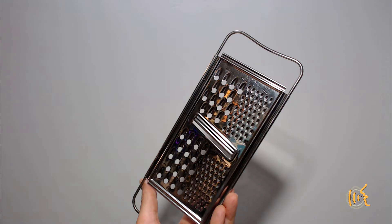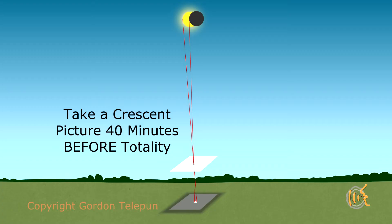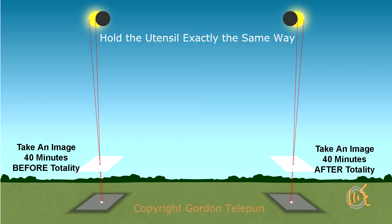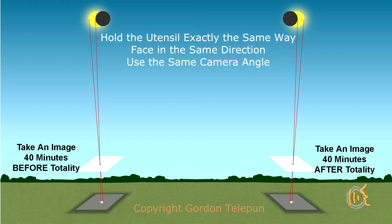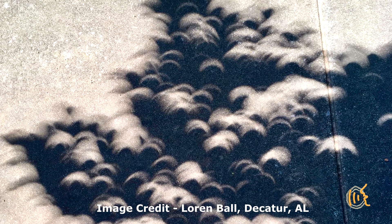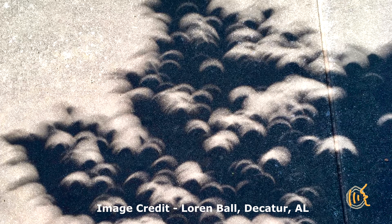You can do an experiment with your pinhole utensil. Take a picture of the projected pinhole crescents at 40 minutes before totality. Then 40 minutes after totality, take the exact same picture. Hold the utensil exactly the same distance off the ground, facing the same direction you did before. Take the picture with the same camera angle. Then look at your two pictures from before and after totality. What happened? Did the pitch of the crescents change over the hour and a half of time?